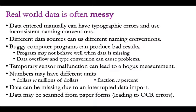The second half is on messy data — how to deal with it. This is a collection of different tools; there's no one solution. Why is data messy? A lot of reasons: data could be entered manually with typographic or spelling errors; people have different conventions for naming things, like 'Sheridan Road' vs. 'Sheridan Rd.'; you might get data from two different sources with different naming conventions; a computer program with bugs might produce bad results; numbers might overflow or produce NaN results; sensor malfunctions can lead to bogus measurements; data might be entered in different units, like dollars vs. millions of dollars, or fractions vs. percentages; data import could be interrupted causing missing data; or data scanned from paper forms can introduce OCR errors.